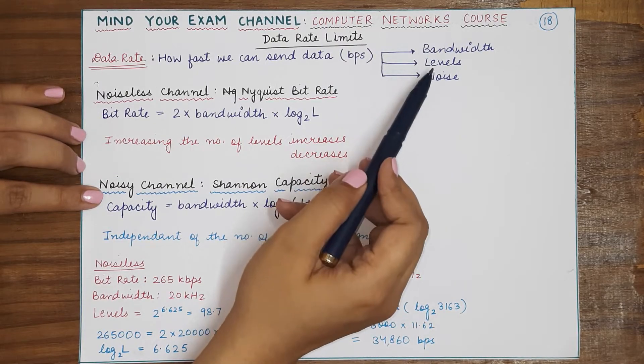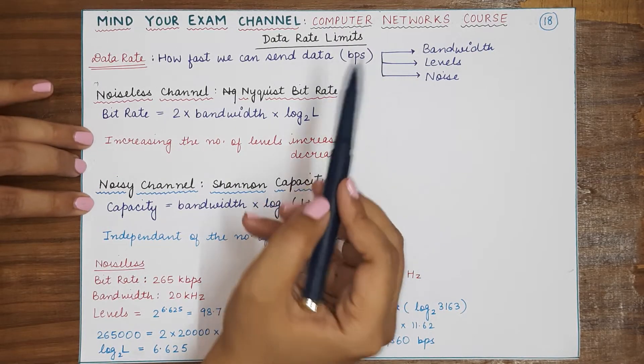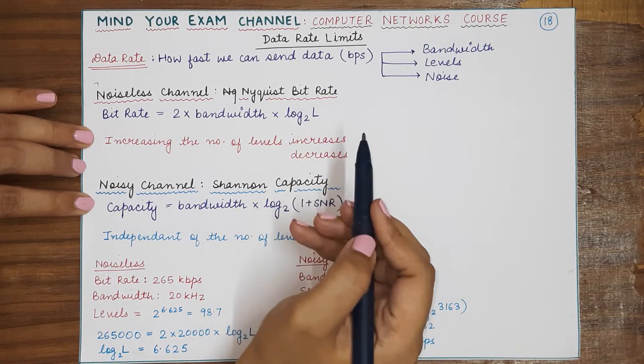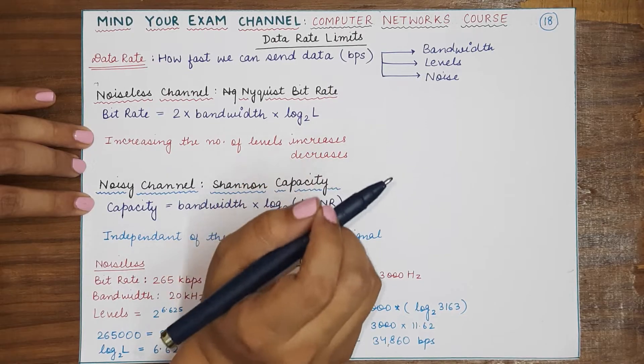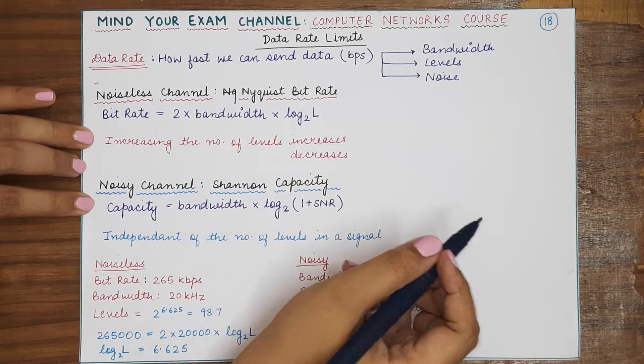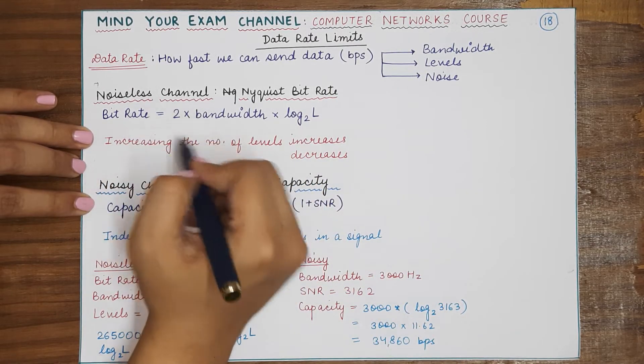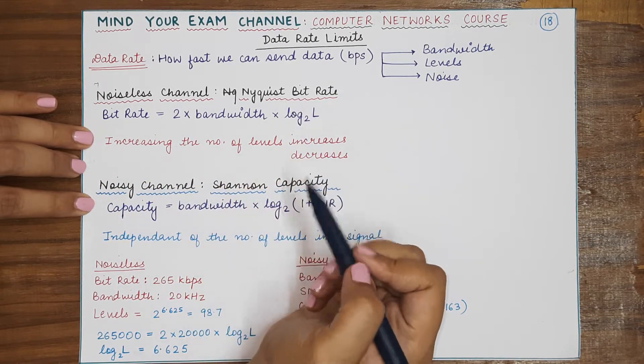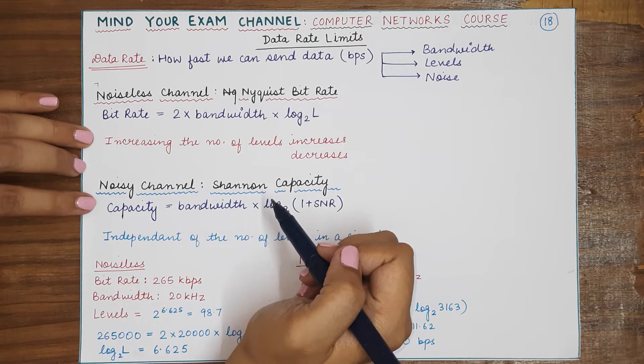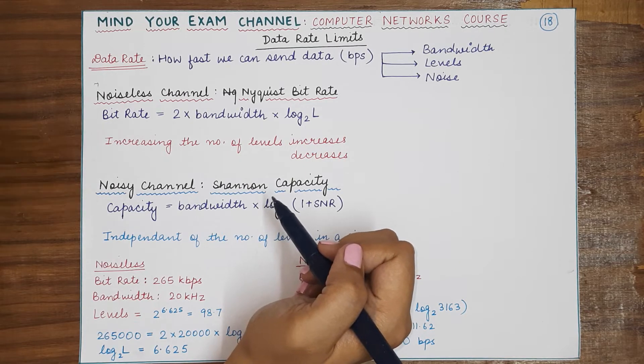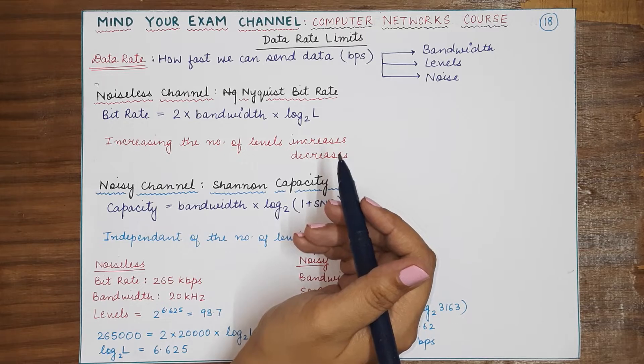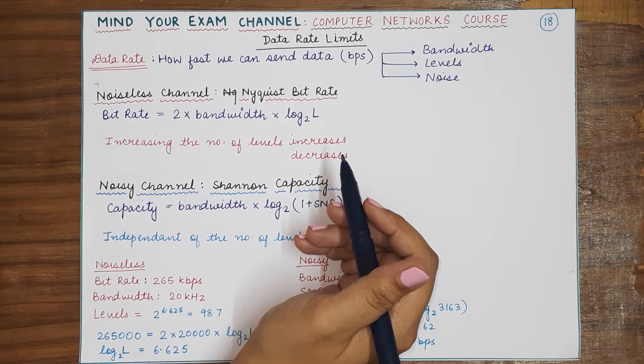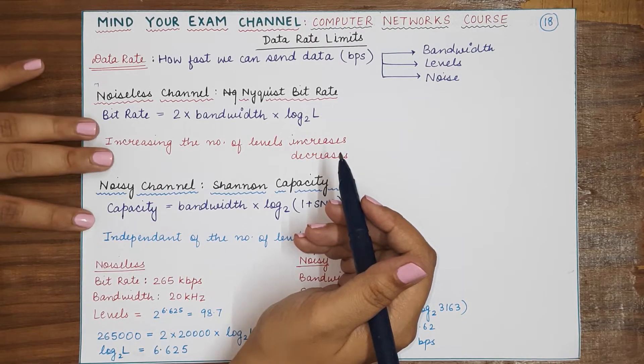Based on this information, there were two theoretical limits that were provided by scientists to tell you theoretically what is the maximum amount of bit rate or data rate that you can achieve on a noisy channel and on a noiseless channel. We have studied in the previous video what is noise, what are distortions, what is attenuation, which basically refers to the different kinds of signal impairment.